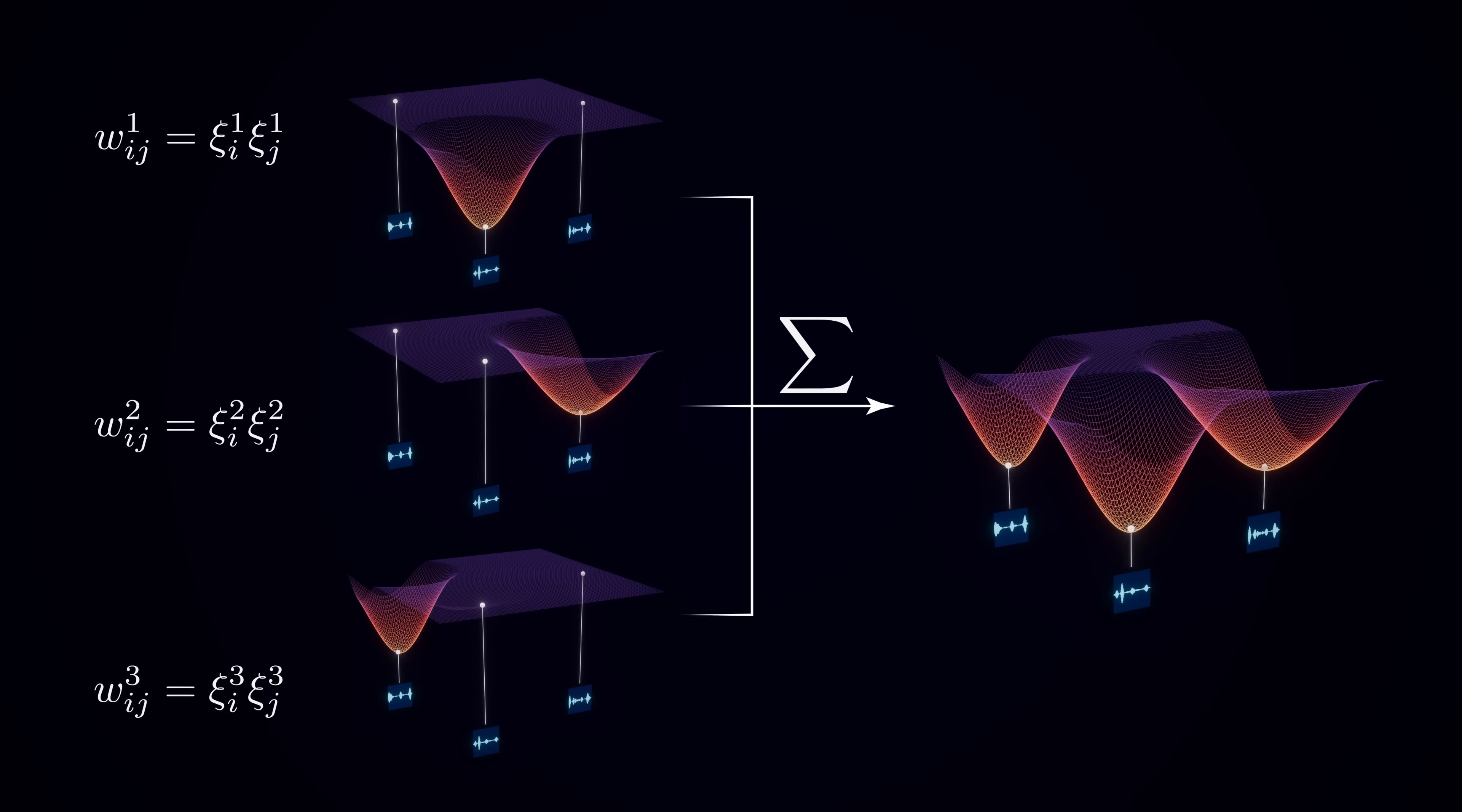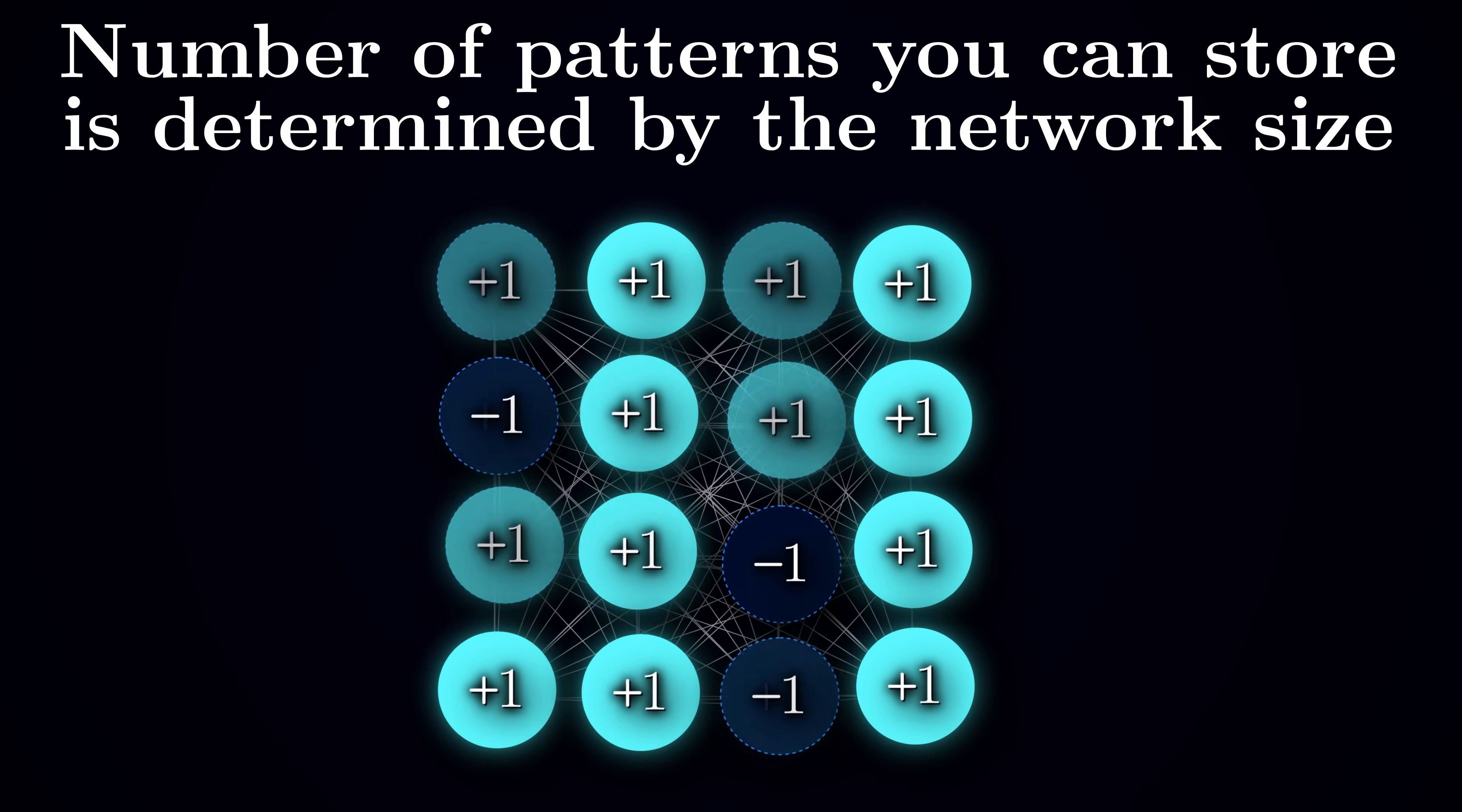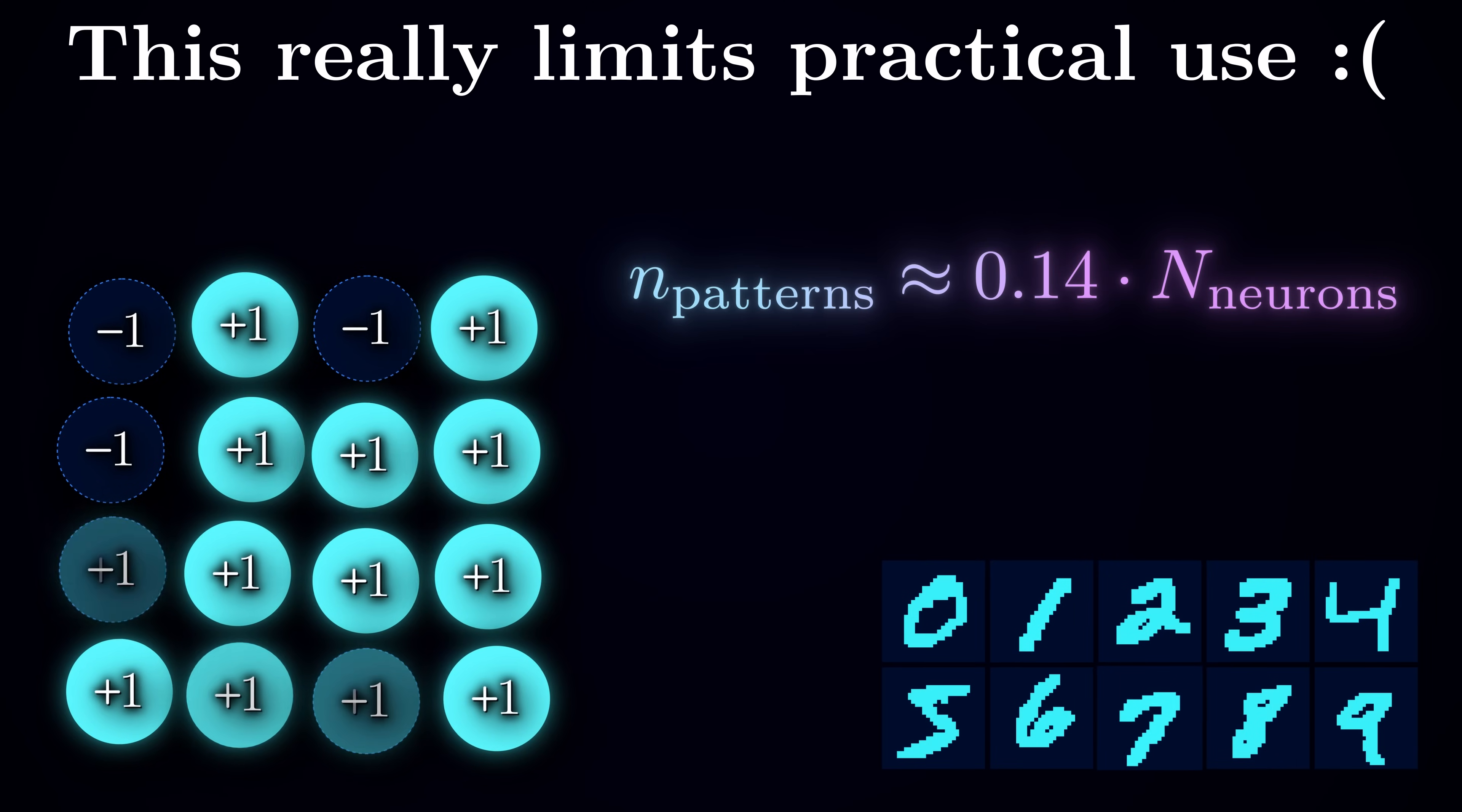And this nicely brings us to the limitation of the Hopfield networks. There is a limited number of valleys we can sculpt in the energy landscape before they start to interfere with each other. At some point, if we try to store too many patterns, the network will fail to converge to a stored pattern reliably and recall weird in-between kind of memories. The total maximum number of patterns you can store is thus limited and depends only on the size of the network. It is approximately 0.14 times the number of neurons. So if you have a Hopfield network of 100 neurons, you can reliably store less than 14 patterns in the best-case scenario. If you are unlucky, however, and some patterns are similar to each other or correlated, their energy wells will begin to interfere even before you reach the full capacity.